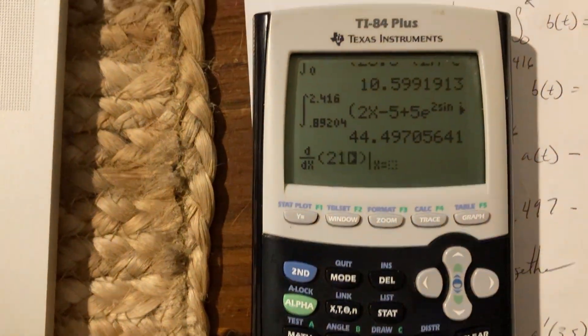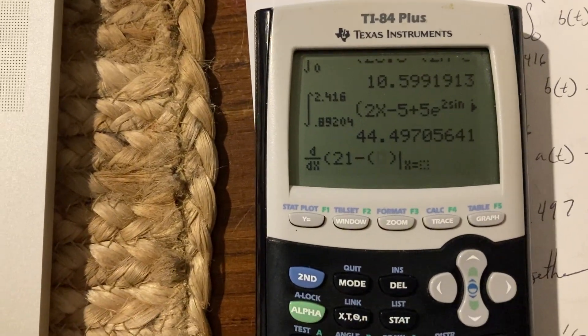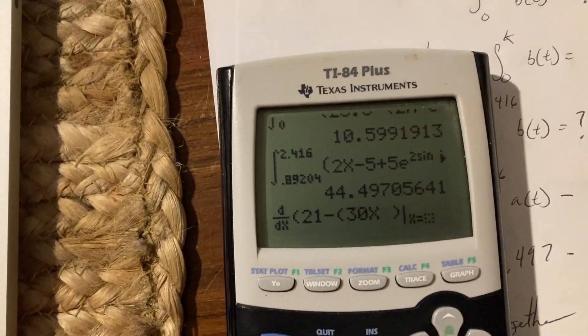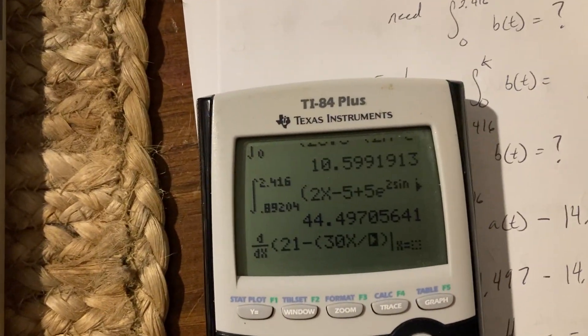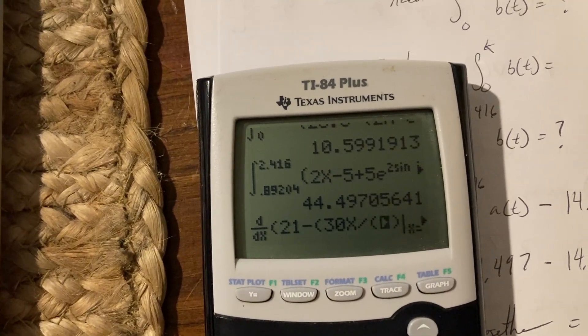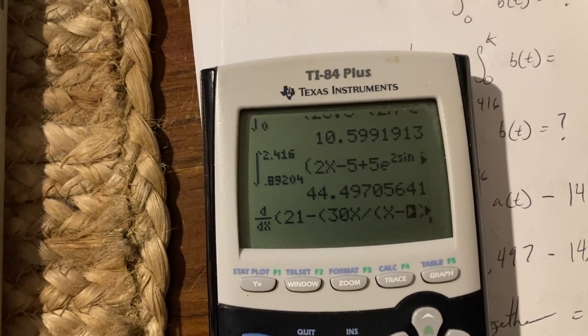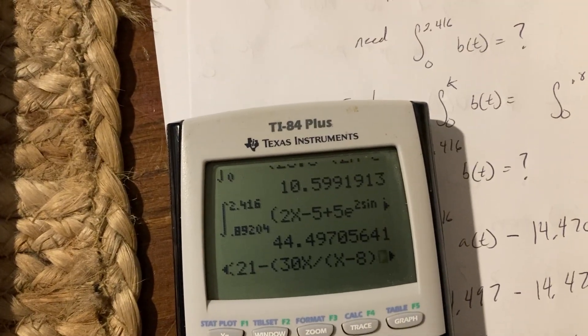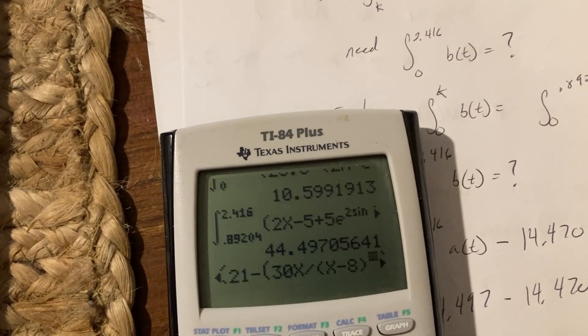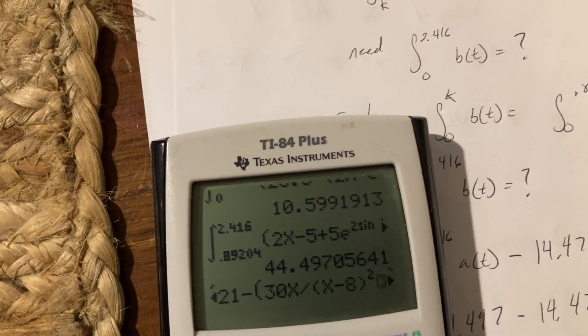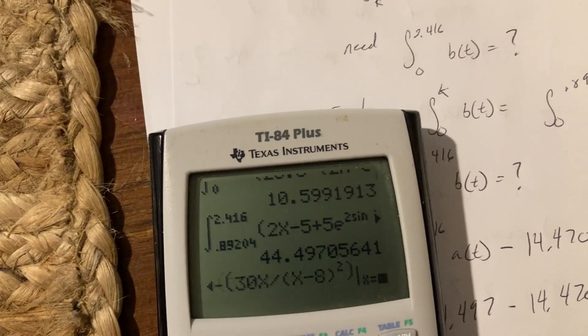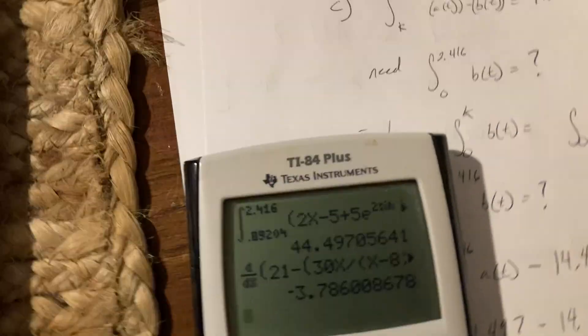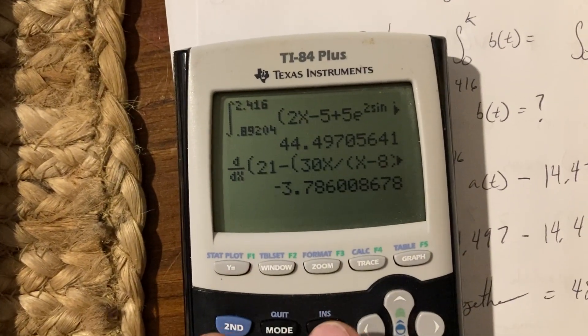I'm gonna do w first, w of t. Okay, so w of t is 21 minus, we need to open these parentheses because this is a full fella, minus 8, this is quantity squared, and we're evaluating at 3.5. So that's negative 3.786.